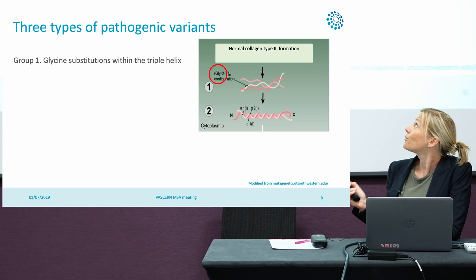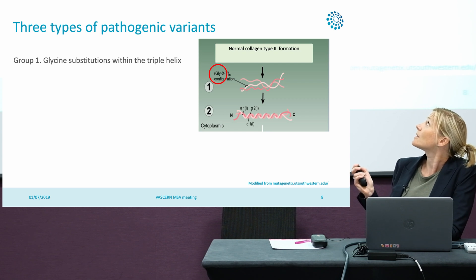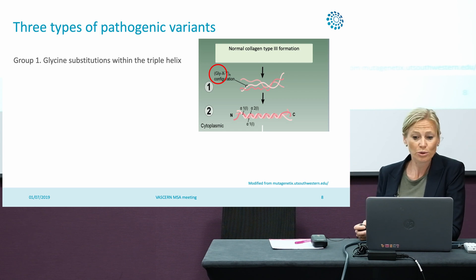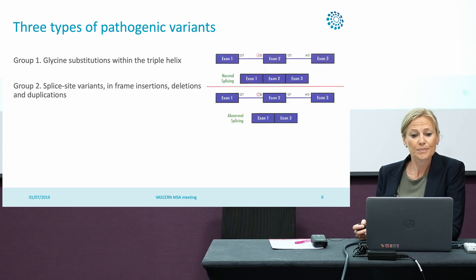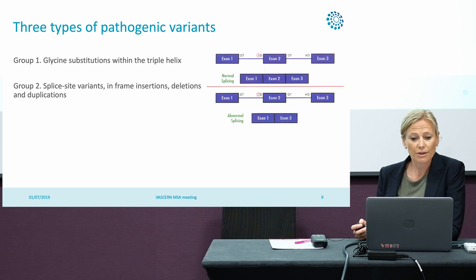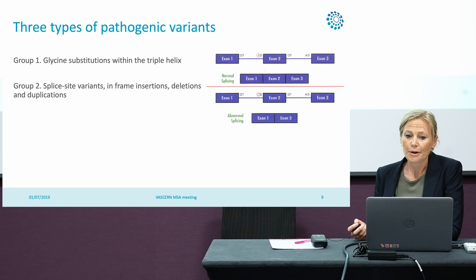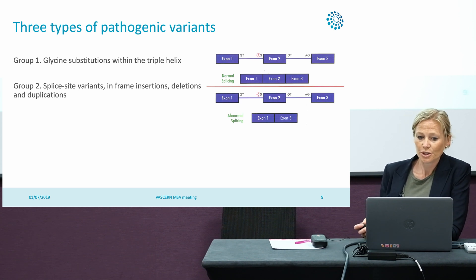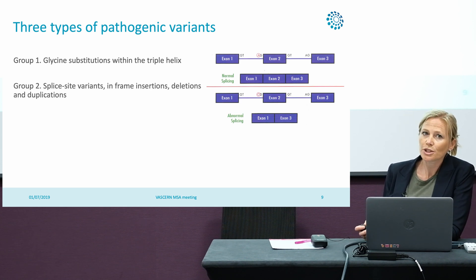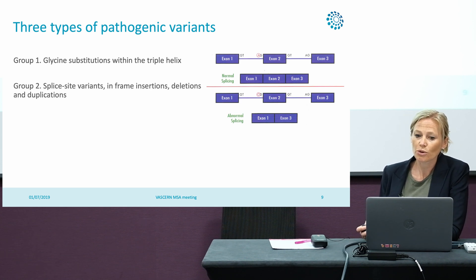So glycine was the first amino acid of this motif. The second group are the splice variants or the in-frame insertions, deletions, or duplications. I'll explain a bit more about the splice variants.